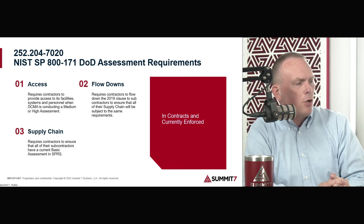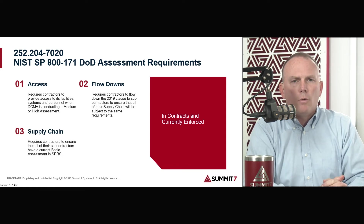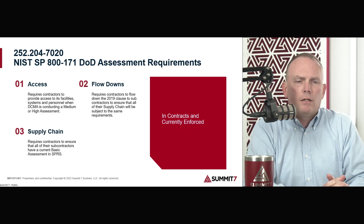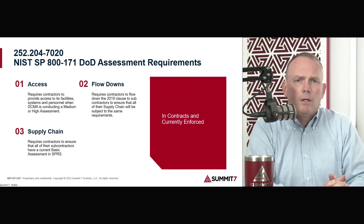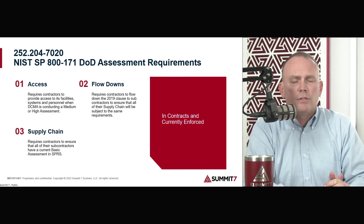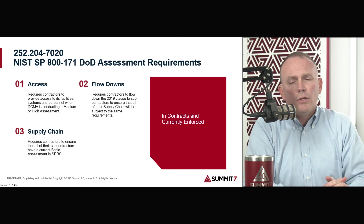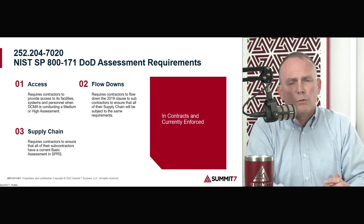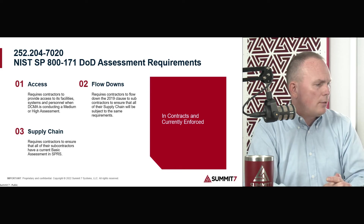A question came in: how do we know if we're creating new CUI? It's recommended to get very familiar with the CUI registry at NARA. That registry lists all the different types of CUI, and you'll need to go through that listing to determine what information you may be handling that qualifies as controlled unclassified information. You can also talk to your program manager or prime contractor, and they can give you a good idea of what type of CUI you may be dealing with.